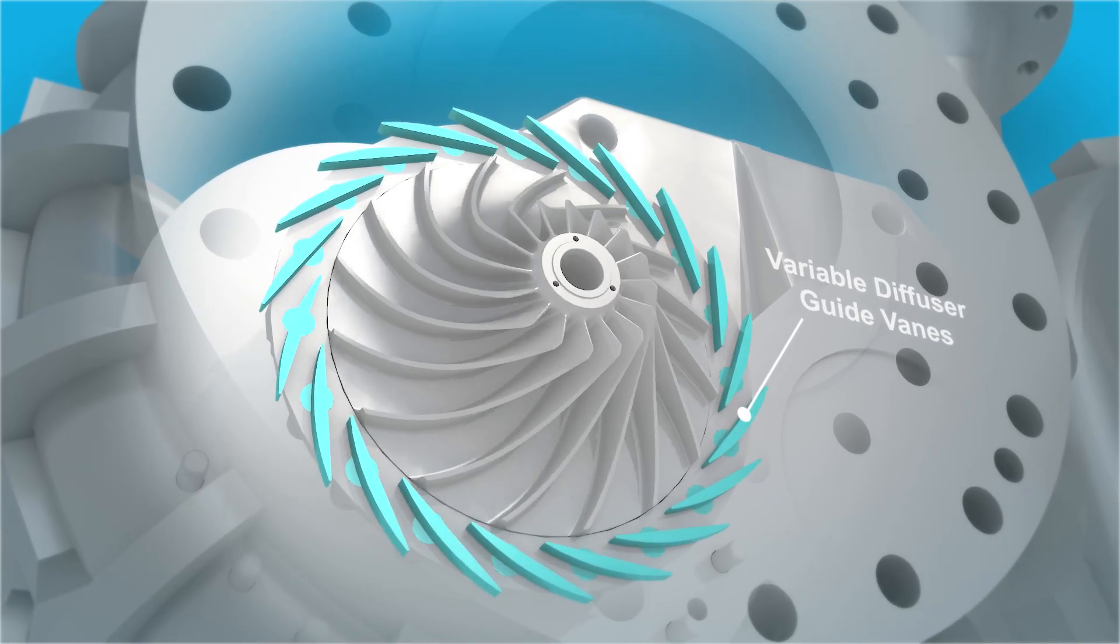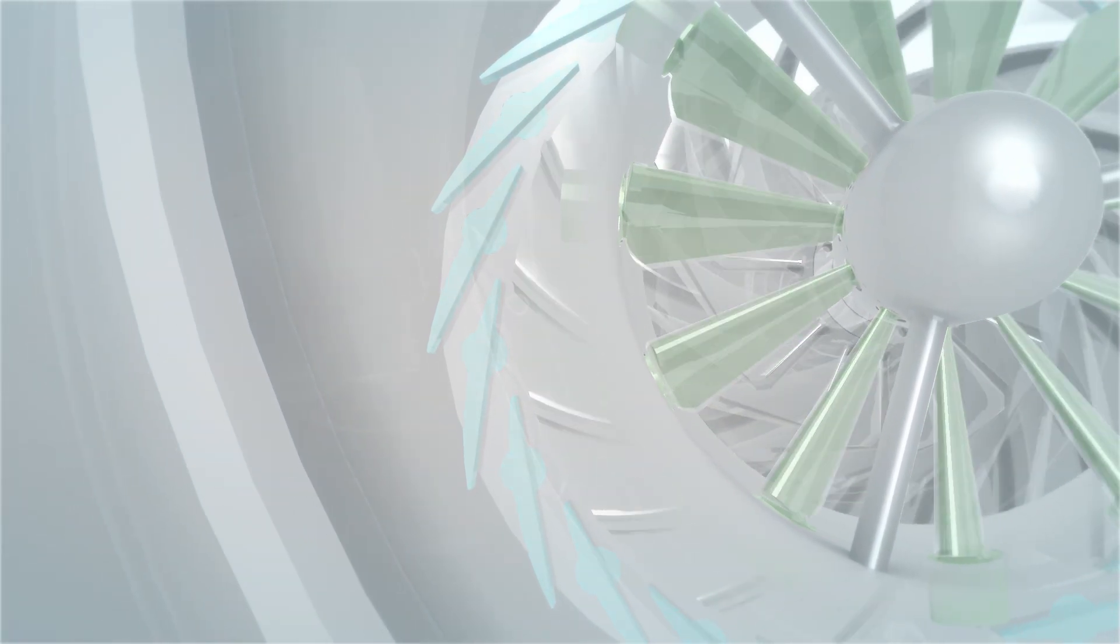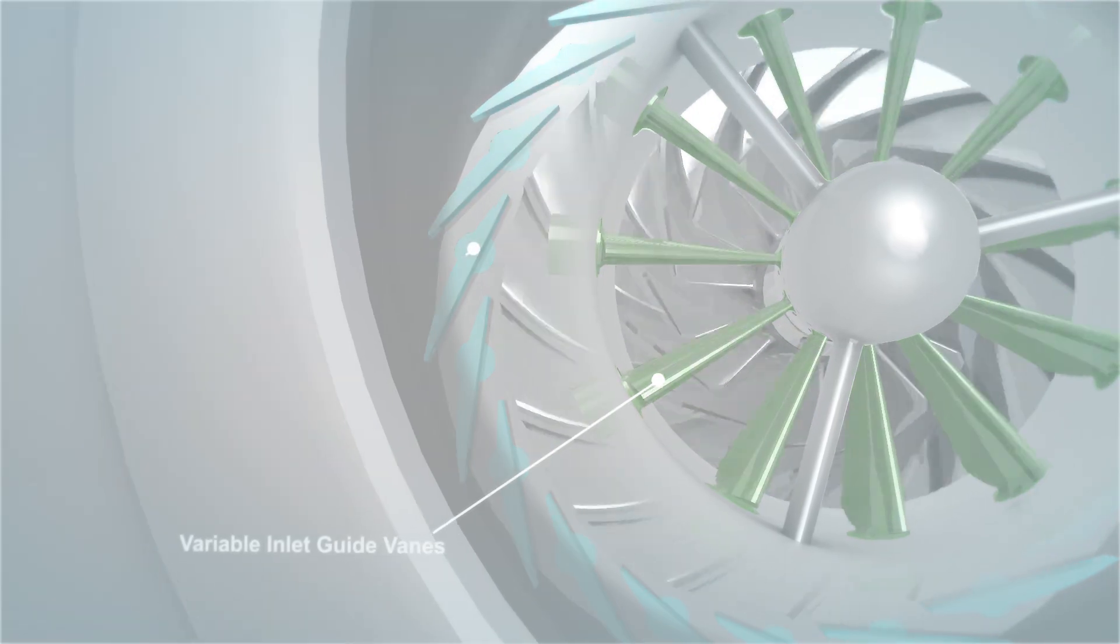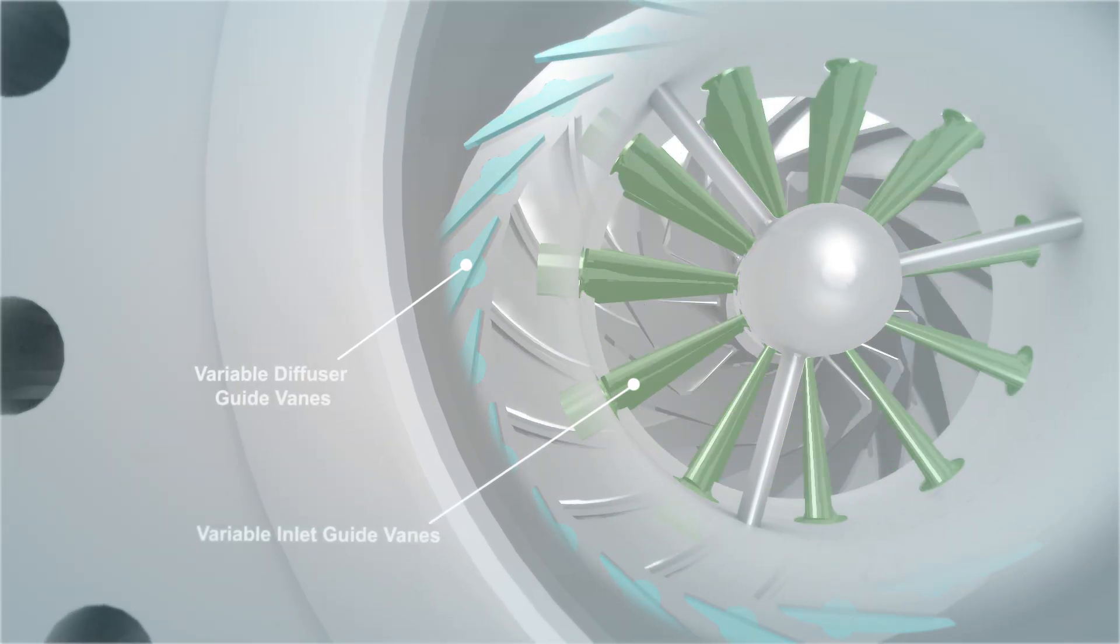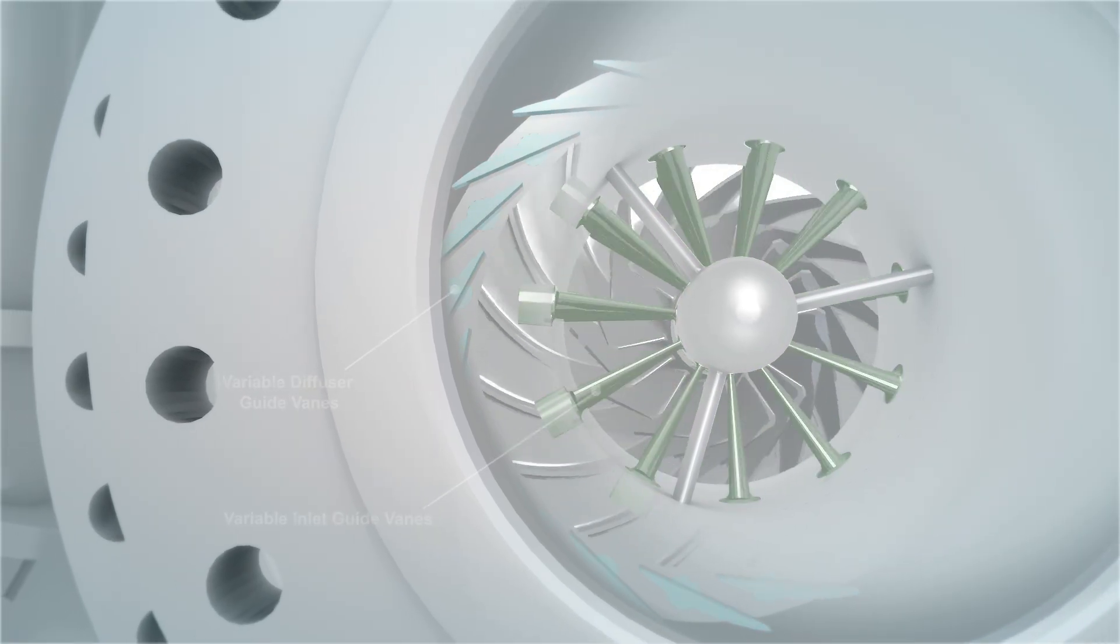Adjustable DGVs enable larger turndown, which ultimately results in wider process control without impairing efficiency, an ideal mix that is increasingly required by process designers. Both variable inlet and diffuser guide vanes provide stable compressor operation over a wide range of conditions at a constant discharge pressure.